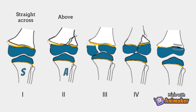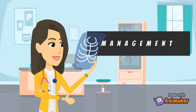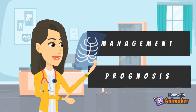3 is for lower — that is, through the epiphysis. 4 is for through everything — that is, through the metaphysis and epiphysis. And 5 is for crush. This classification has implications on the management and prognosis of the fracture.